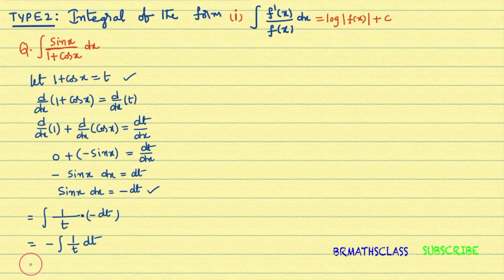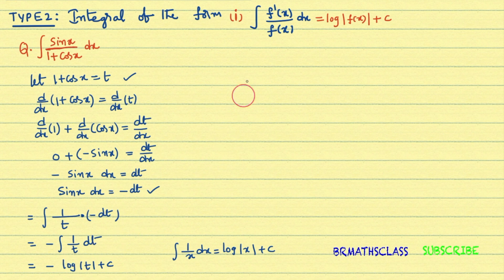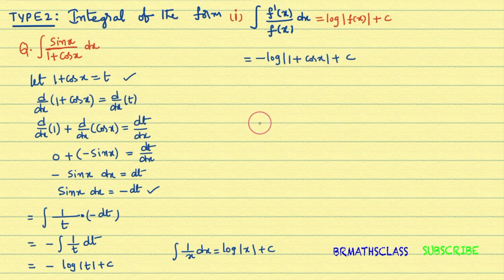We have −∫ 1/t dt. Using the formula ∫ 1/x dx = log|x| + c, we get −log|t| + c. Since we let t = 1 + cos x, substituting back gives −log|1 + cos x| + c. So the integral of sin x / (1 + cos x) dx equals −log|1 + cos x| + c.